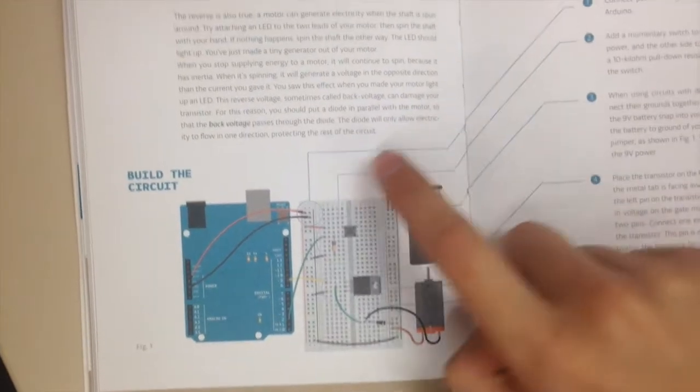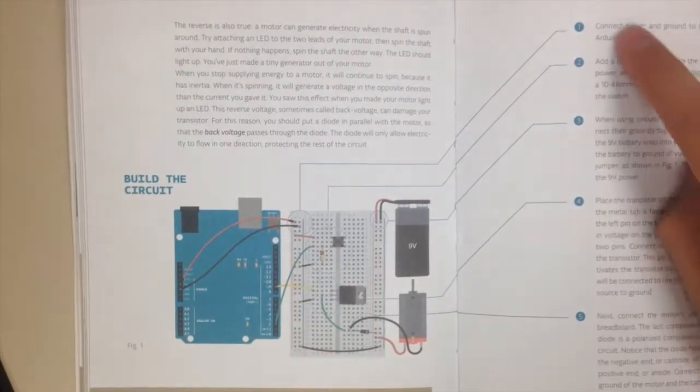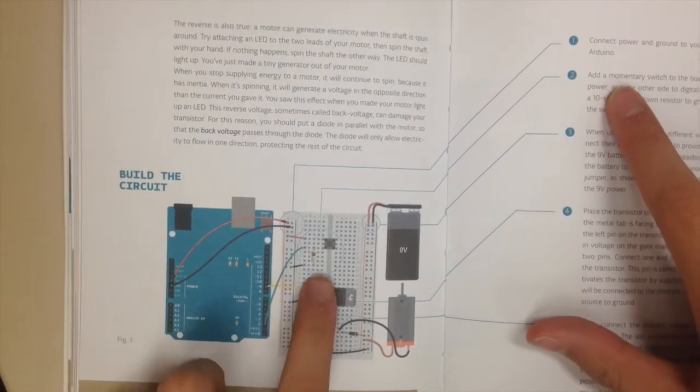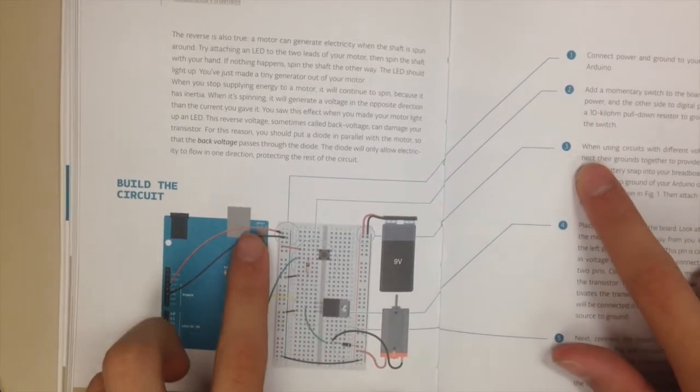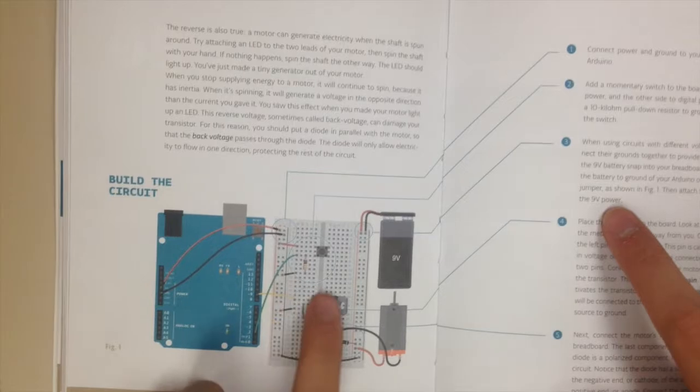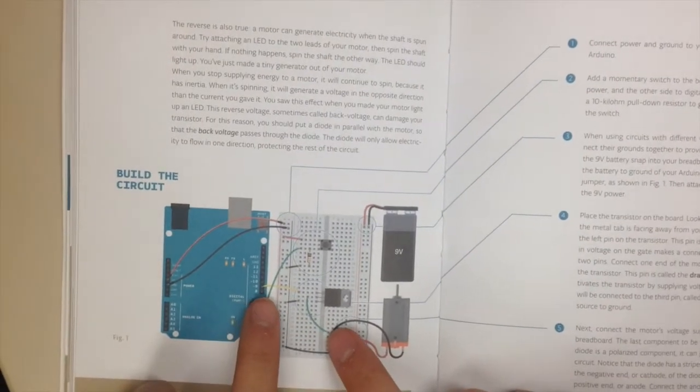When our switch pin connected to the ground and 5 volt pin on our Arduino gets information that the switch turned on and the circuit closes, a signal is sent through our motor pin into a transistor which splits the current. One current into the ground and one current to the motor.